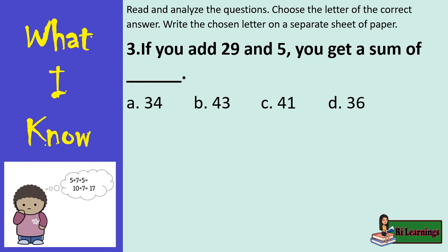3. If you add 29 and 5, you get a sum of A. 34, B. 43, C. 41, D. 36.